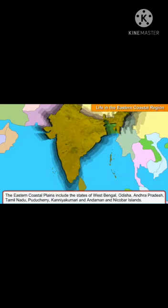Many states come under the eastern coastal region. Some states that come here are West Bengal, Odisha, Andhra Pradesh, Tamil Nadu, Puducherry, Kanyakumari, and Andaman and Nicobar Islands. This whole area comprises the eastern coastal region.